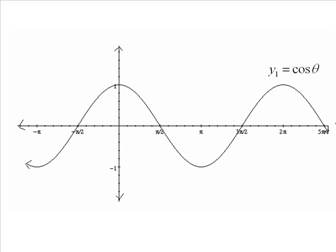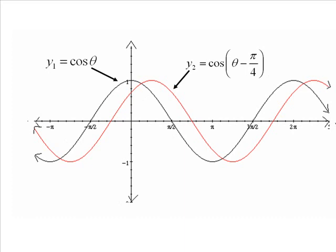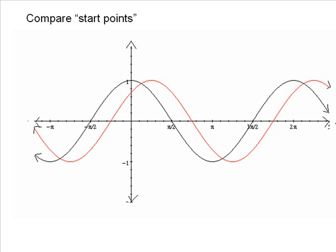Now the second curve has got this phase shift of pi over 4 to the right. And you'll notice the graph, its shape is identical, but it's just been moved over, pi over 4 units to the right. So the graph was literally picked up and moved over. Now that means that its crest, its starting point, is no longer on the y-axis. It's pi over 4 units over to the right.